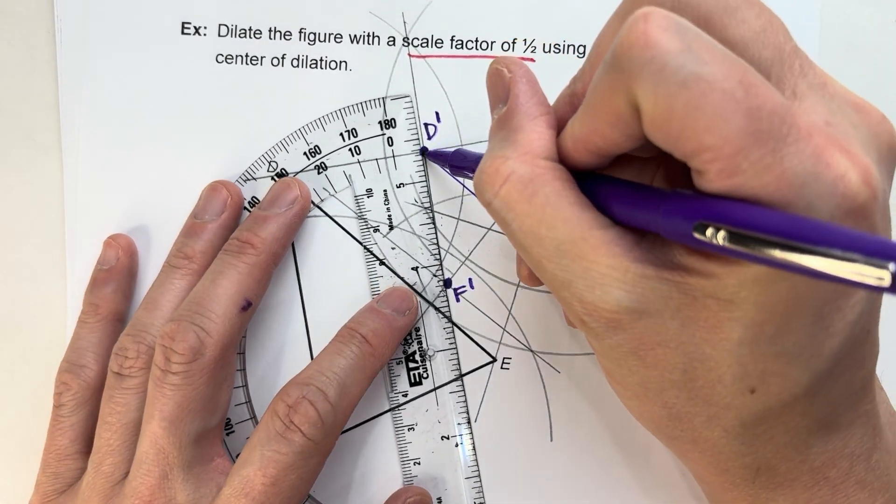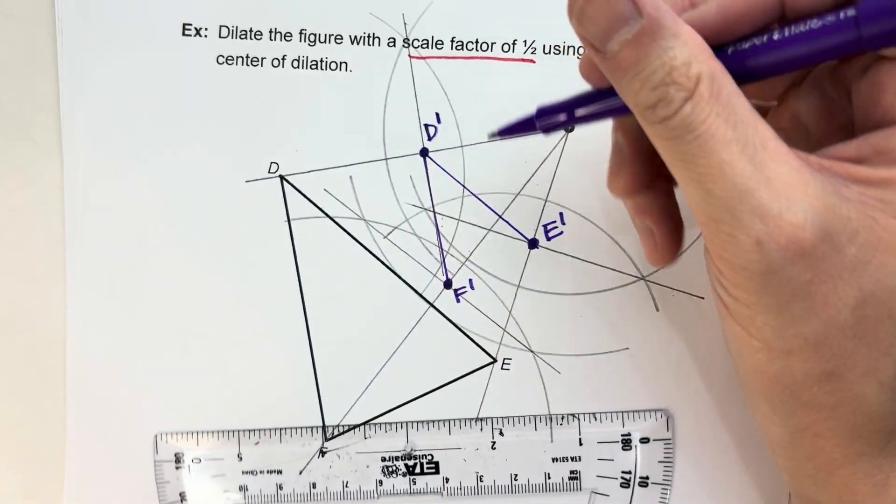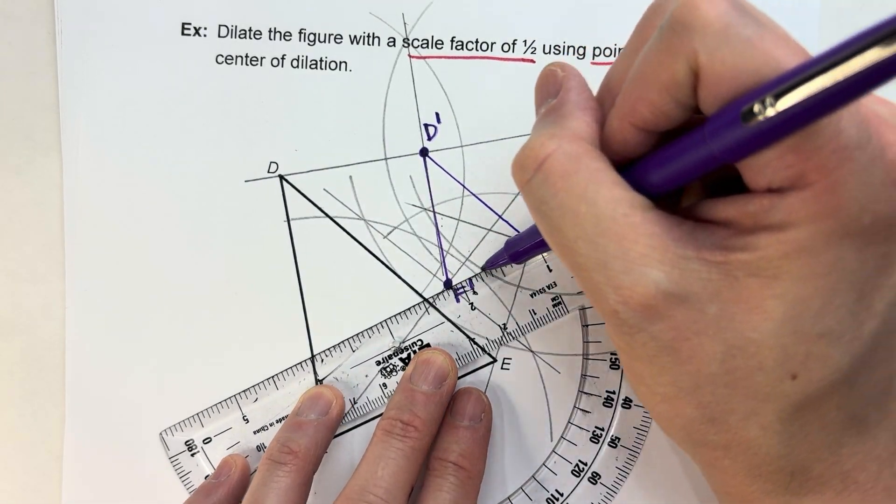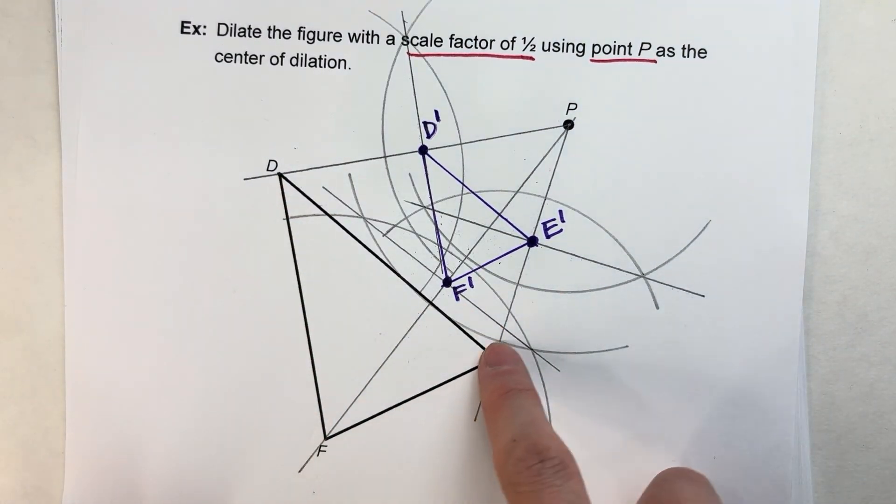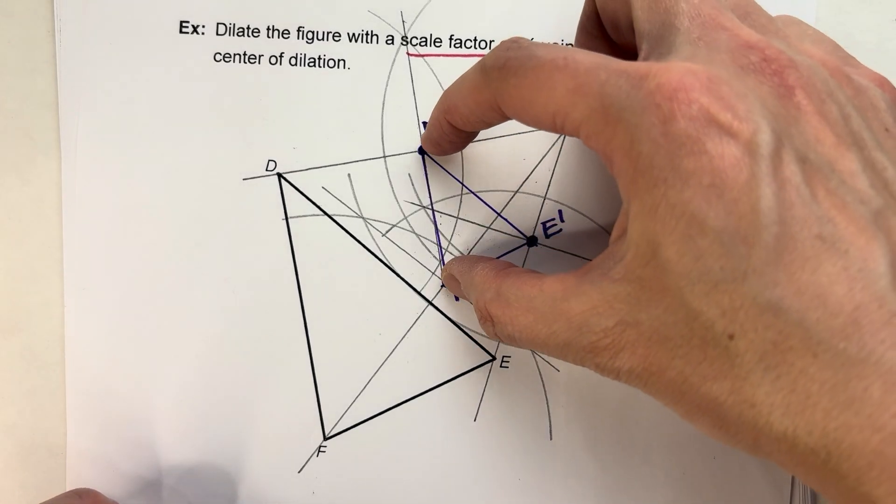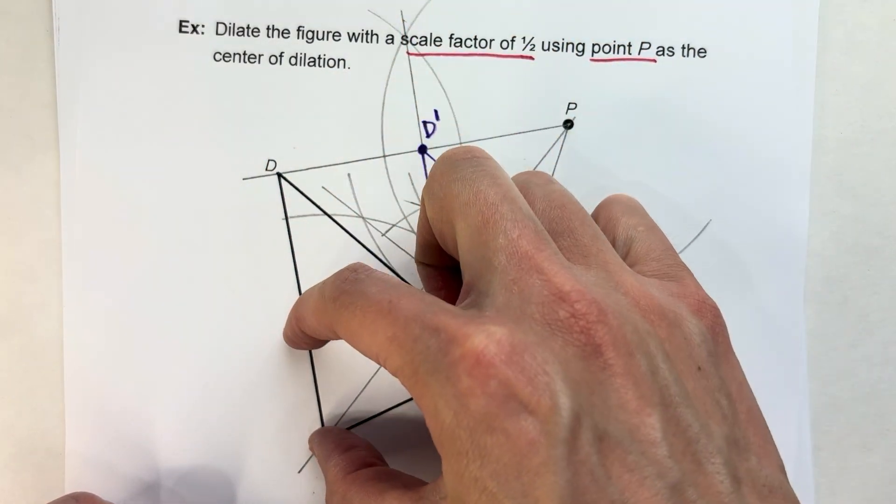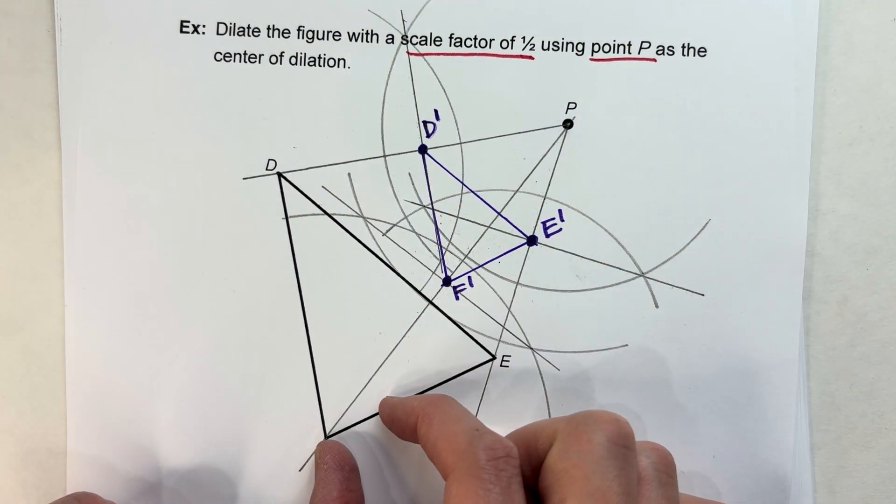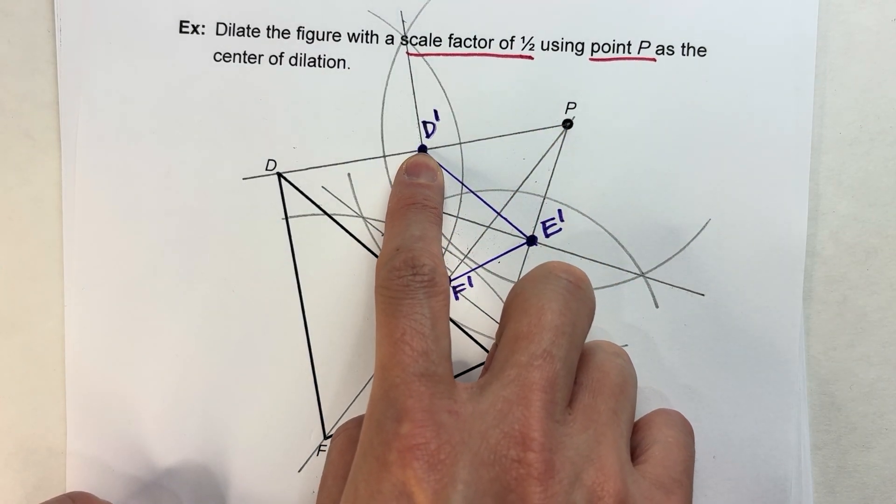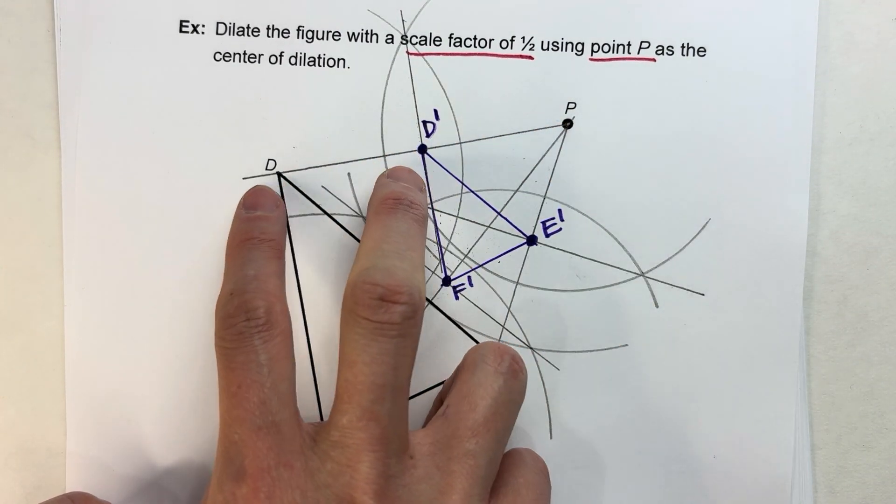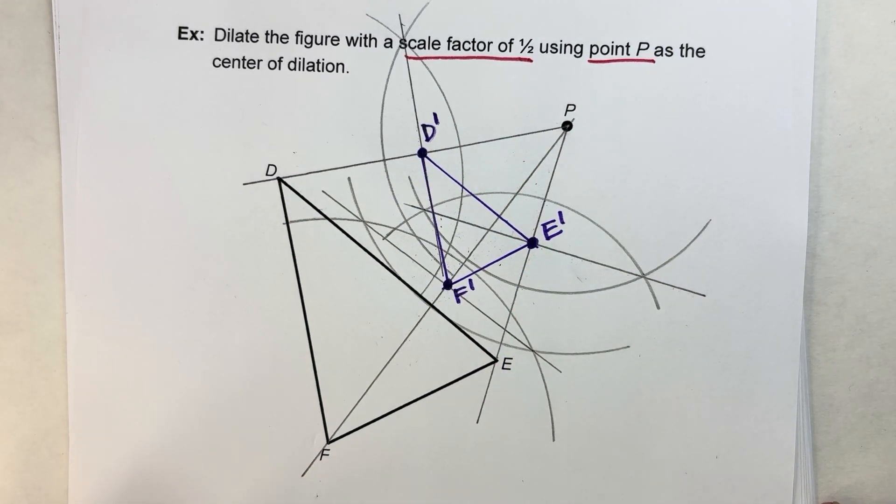D to E, D to F, E to F. There we go. And there's my final product there. And notice the original triangle, the new triangle, the sides of the new triangle are half the length of the original one. And also notice it's closer to P. The new distance from D to P is half the distance the original D was to P.